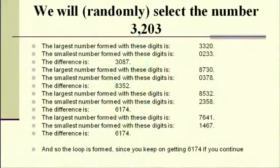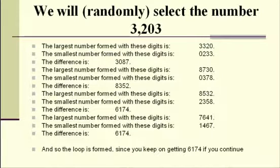Let's do one together with 3203. The largest arrangement is 3320; the smallest is 0233. Subtracting gives 3087. Rearranging: largest is 8730, smallest is 0378, difference is 8352. Repeat: largest is 8532, smallest is 2358, and the difference — 6174. I said it was going to happen, and it happened.